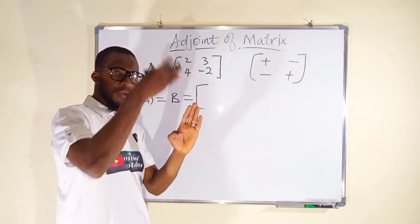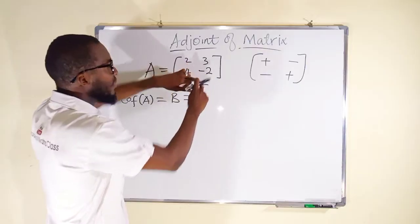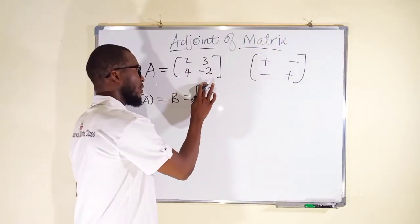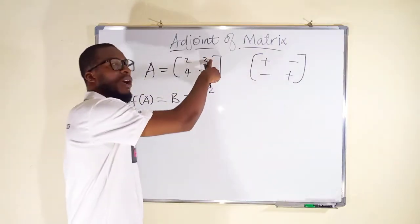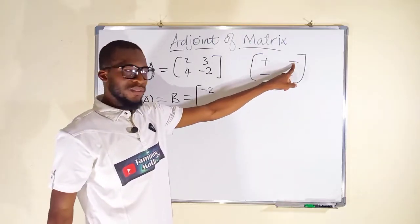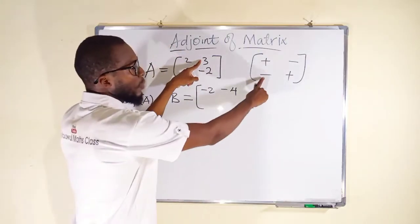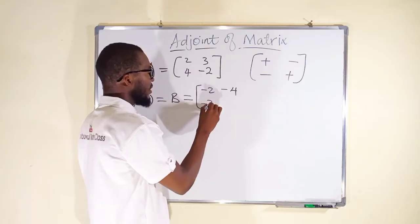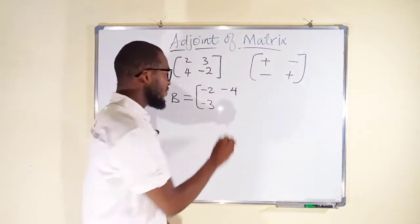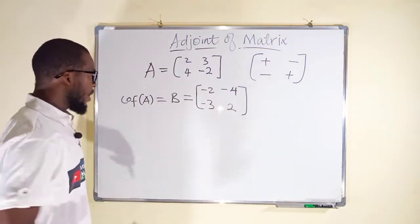To find the cofactor of each entry, delete the row and column of that element. Starting with the first entry, we delete its row and column — what remains is negative 2. Multiplied by the positive sign, it stays negative 2. For the first row, second column, we delete and what remains is 4; multiplied by the negative sign we get negative 4. Continuing, we get 2 multiplied by positive, which stays positive 2.